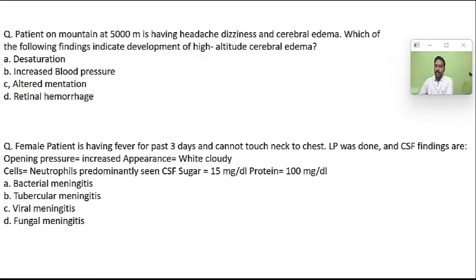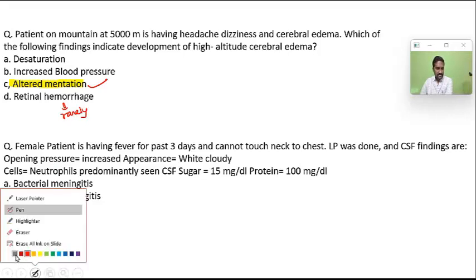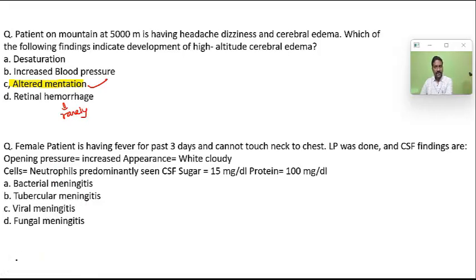A patient on a mountain at 5000 meters is having headache, dizziness, and cerebral edema. Which of the following indicates development of high altitude cerebral edema? Altered mentation is the most important feature. Rarely, retinal hemorrhages can also occur. Desaturation is a feature of high altitude pulmonary edema, and increased blood pressure is generally not a feature.